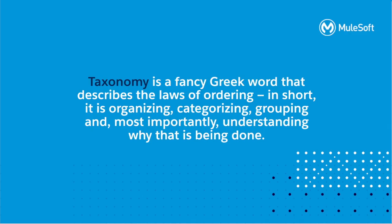Taxonomy is a fancy Greek word that describes the law of ordering. In short, it is organizing, categorizing, grouping, and most importantly, understanding why it is being done. The exchange portal already holds a large amount of APIs, and adding more to that number makes it challenging to discover and consume APIs. However, this is where categorization comes into play.